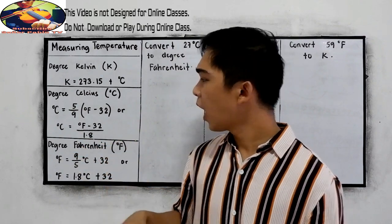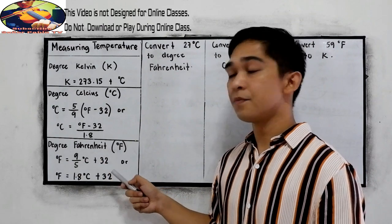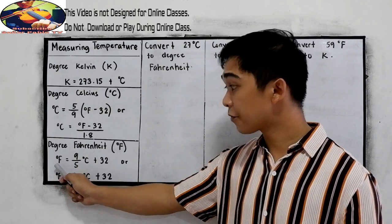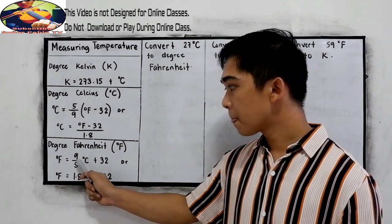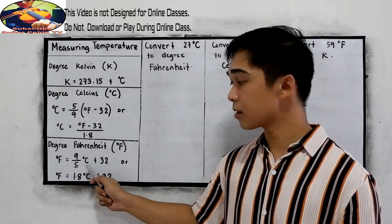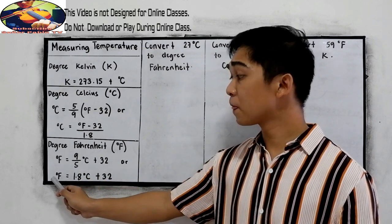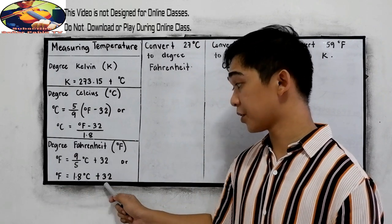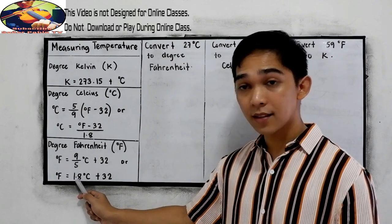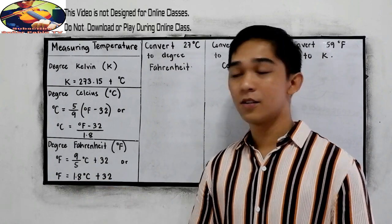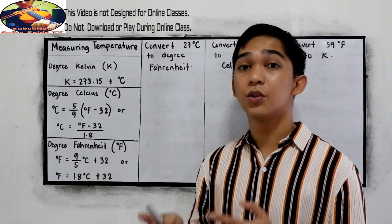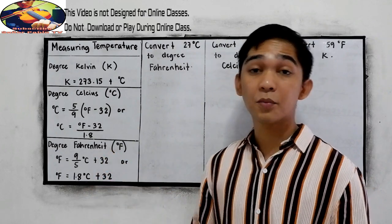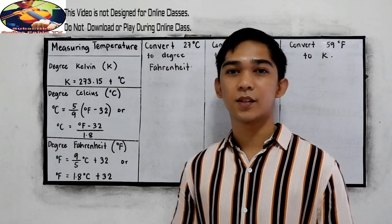And for degree Fahrenheit, represented by the capital letter F: degree Fahrenheit is equal to 9 over 5 times degree Celsius plus 32, or equivalently, 1.8 times degree Celsius plus 32. Again, 1.8 is the same as 9 over 5. So whether you want to use a fraction or decimal, you need to choose and decide — whatever you use in the formula, we will come up with the same answer.